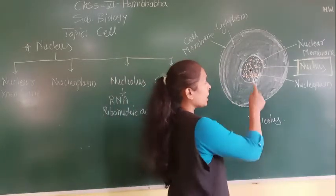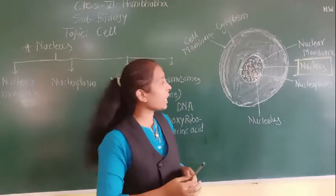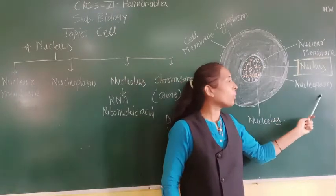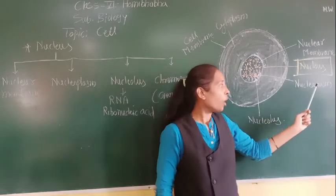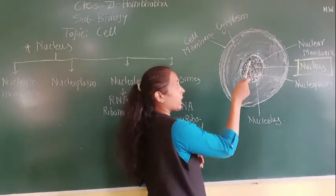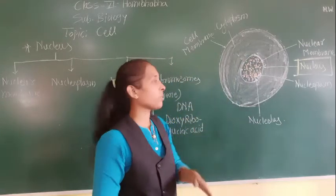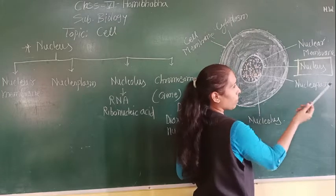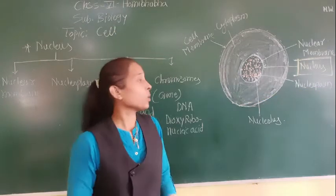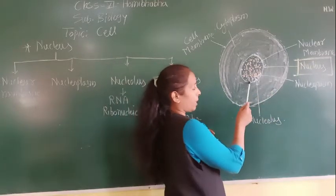Inside the nuclear membrane, there is a fluid, thick substance present and that substance is called nucleoplasm. Just as there is cytoplasm in the cell, inside the nucleus there is a fluid substance called nucleoplasm — the name comes from it being a liquid present in the nucleus.